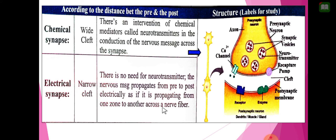In summary: if the synapse is electrical, the nervous message propagates from the pre- to the post-synaptic membrane electrically via ions, as if propagating from one zone to another across the nerve fiber. This concludes the first lecture of today. We have two lectures; we finished the first one, and in the second lecture we will also finish all of Document 5.